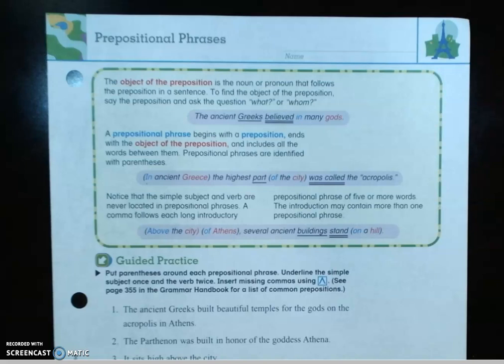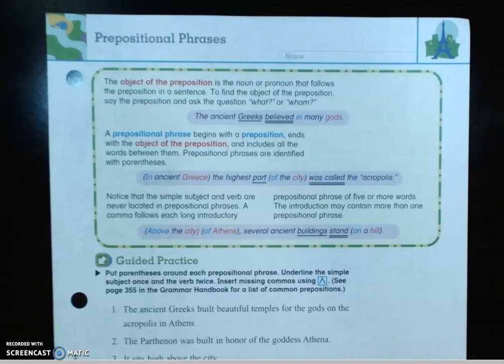Notice that the simple subject and the verb are never located in the prepositional phrase. Also, a comma follows each long introductory prepositional phrase of five or more words. The introduction may contain more than one prepositional phrase. There can be many prepositional phrases in a sentence.